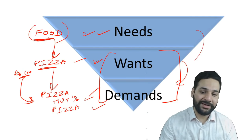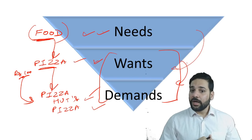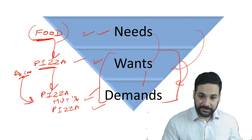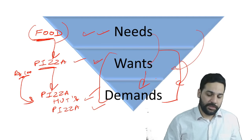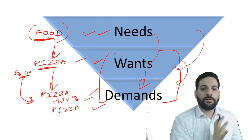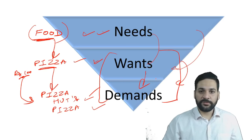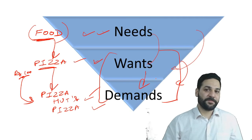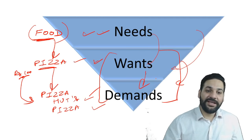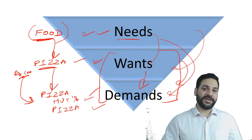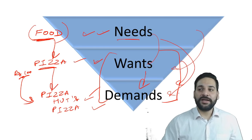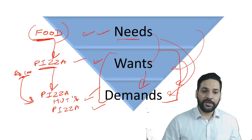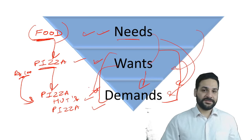Marketing campaigns try to convert needs into wants, or wants into demands. For example, in Ludhiana at around 12:30 or 1 o'clock, I get an SMS from Swiggy or Zomato offering a 30% coupon — they know I'm about to eat, so they are trying to convert my need into a demand. Similarly, just before a SEBI Grade A exam, you get promotional emails from test series providers converting your wants into demands.